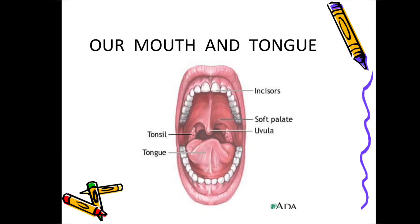Next we have the soft palate — what you call 'talu' in Hindi — the hard portion on the upper jaw is called the soft palate. Next is the uvula. You can feel the uvula; you can also see it if you open your mouth in front of a mirror.